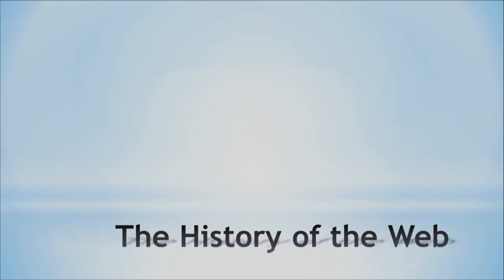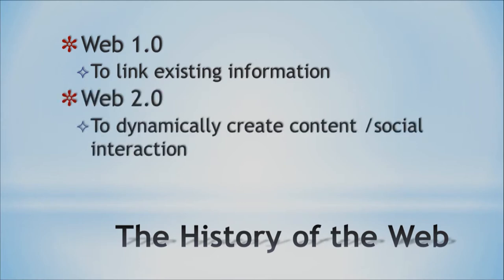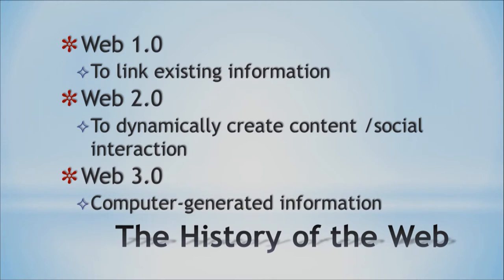Let's think about how we use the internet and the web together. At the very beginning, one of the things you could do was just share information — that was Web 1.0. Then we began creating content and doing things like Facebook where people could publish things — that was Web 2.0. Nowadays, computers are smarter, and we're in Web 3.0, which helps us generate information.